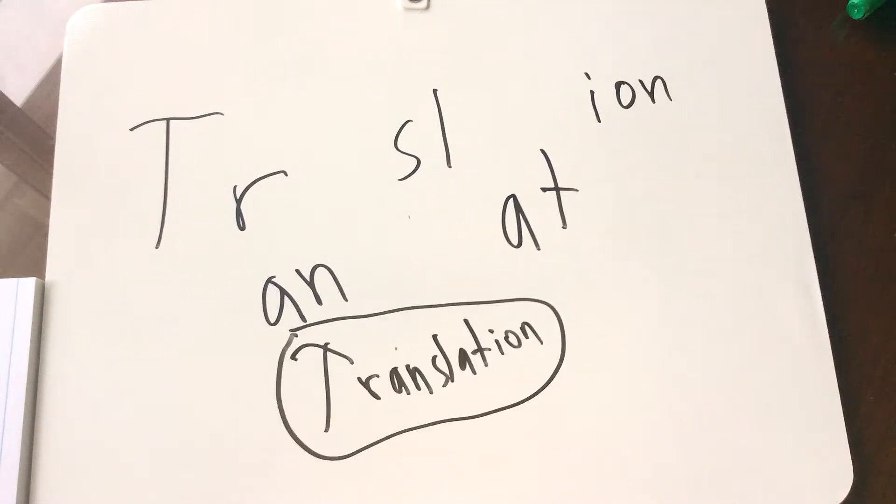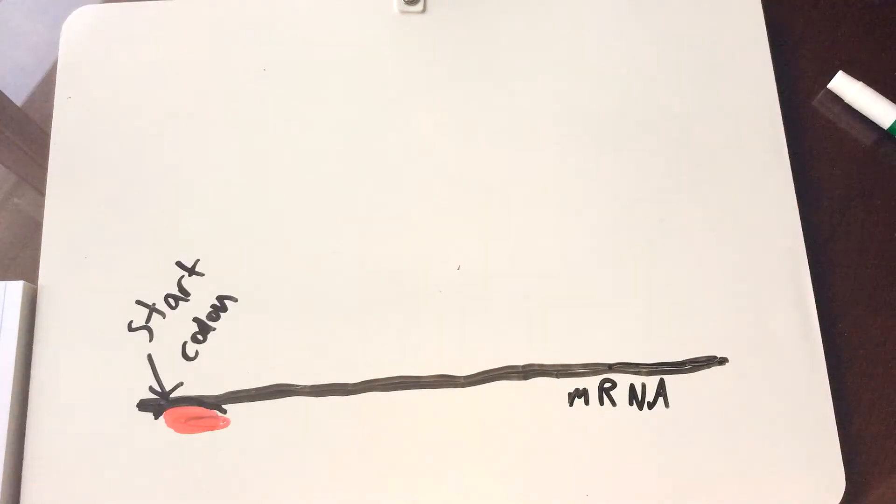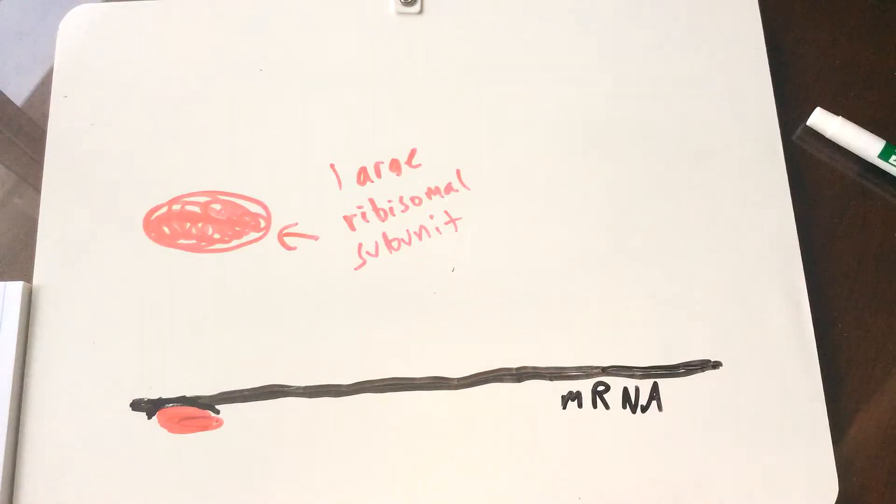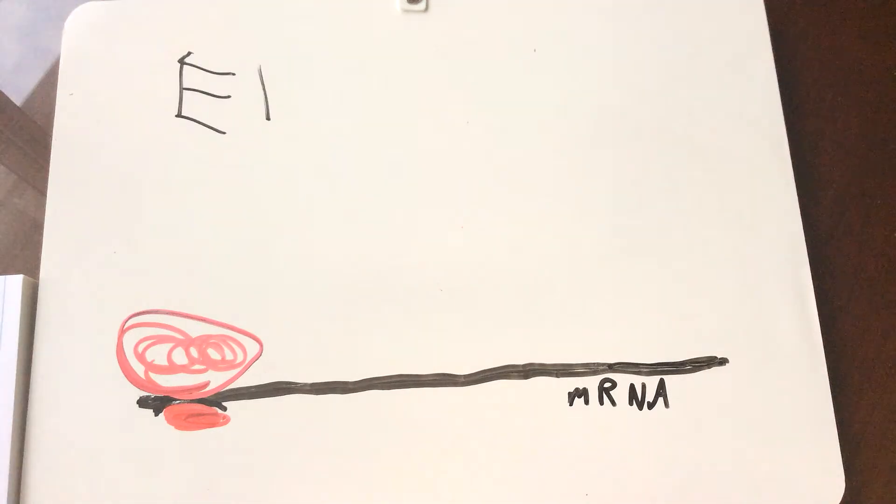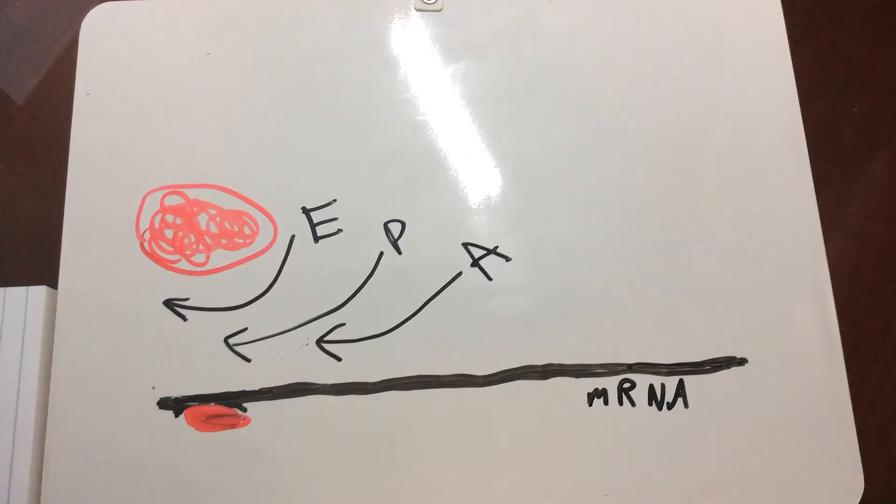Translation occurs in the ribosome and the purpose is to make protein using amino acids from the cytoplasm. First, mRNA binds to the smaller ribosomal subunit. The tRNA anticodon binds to the mRNA at the start codon.